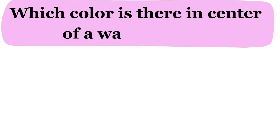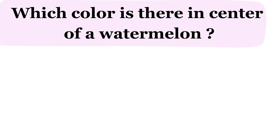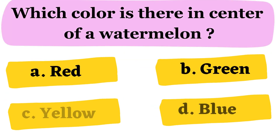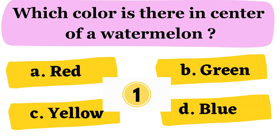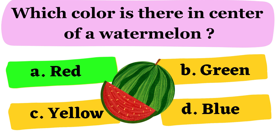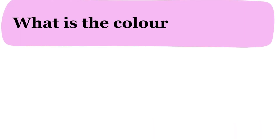Next question. Which color is there in the center of a watermelon? A. Red B. Green C. Yellow D. Blue. The correct answer is option A. Red.